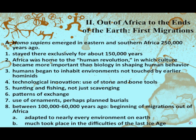Homo sapiens emerged in eastern and southern Africa 250,000 years ago. They stayed there exclusively for about 150,000 years, predominantly in the northeastern portion of Africa — bordering the Red Sea and Indian Ocean region. Africa was home to the human revolution, in which culture became more important than biology in shaping human behavior. Culture is going to be extremely important.